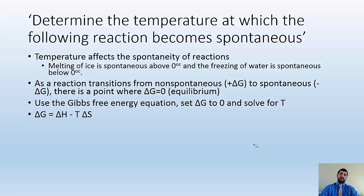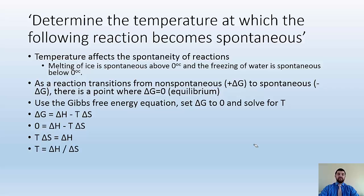Using the equation delta G equals delta H minus T delta S, and setting delta G to zero: zero equals delta H minus T delta S. Rearranging, T delta S equals delta H, and dividing both sides by delta S gives T equals delta H divided by delta S. This is the equation we use to find the transition temperature.